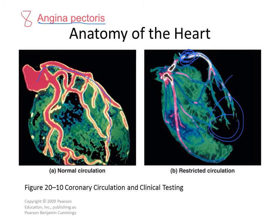Angina pectoris is chest pain from lack of blood flow to the heart. It's a blessing when people experience it because it indicates dangerously unhealthy blood vessels and high risk of a heart attack. The vessels involved here are the coronary arteries — the blood vessels that feed the heart muscle itself. If the coronary arteries get blocked, the result is angina pectoris or worse, a heart attack.